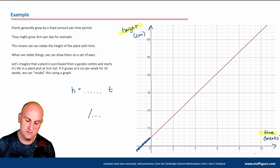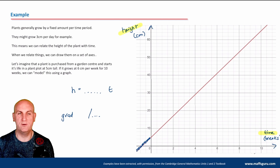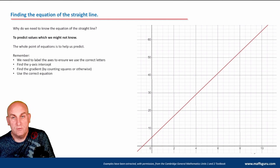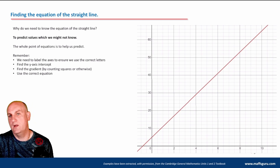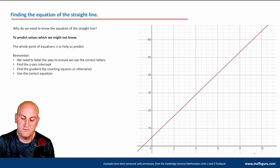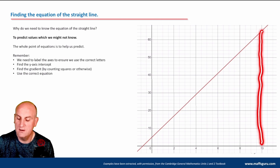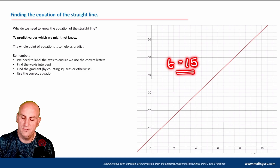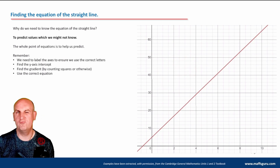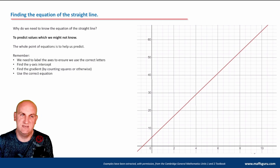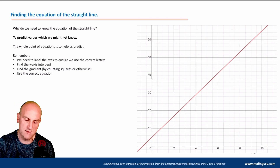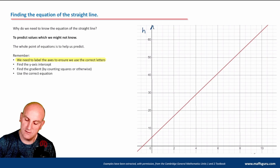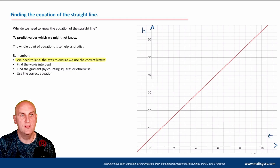Because it says six centimeters per week, whenever you have a 'per something,' the chances are they are telling you the gradient. Linear modeling just turns a real-life situation into a graph. Why do we need the equation of a straight line? To predict values. If I wanted to know how big my plant was after 15 weeks, the graph only goes to 10 weeks, but with a formula I can put in t = 15 and work it out. Always use the correct letters that link the axes — here h and t — find the y-axis intercept, find the gradient, and write the correct equation.